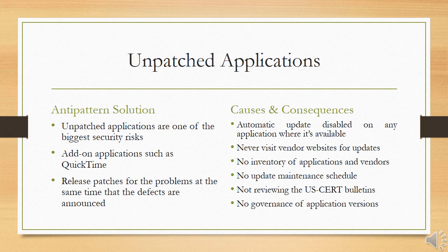Vendors try to release patches at the same time that defects are announced, but the lag between patch release and installation creates a vulnerability window for attackers. Announcement of a vulnerability and binary patch gives attackers clues about how to exploit the weakness, and eventually security researchers may release the exploit publicly. Research has found that enterprises are effective at keeping OS patches current but ineffective at keeping application patches up to date. Causes, symptoms and consequences include: automatic update disabled on applications where available, no visits to vendor websites for updates, no inventory of applications and vendors, no update maintenance schedule, not reviewing US-CERT bulletins, and no governance of application versions.